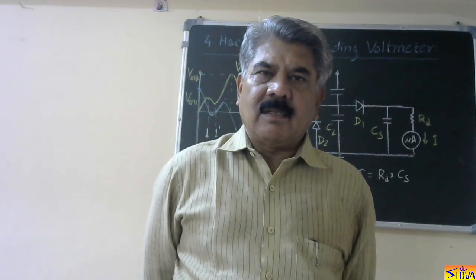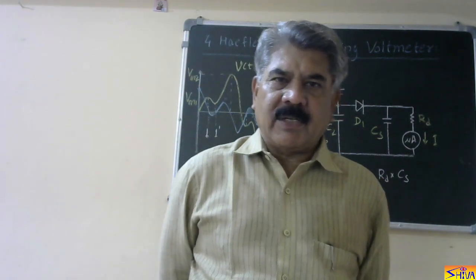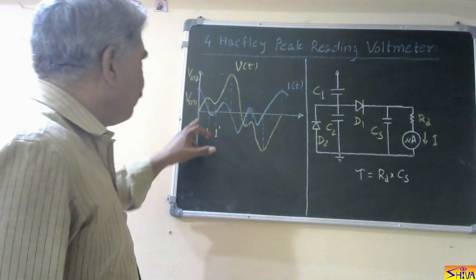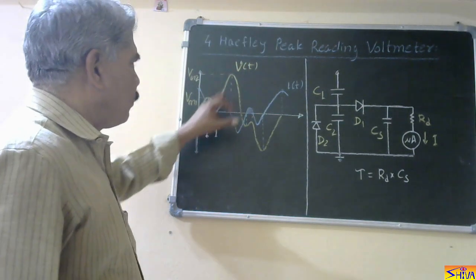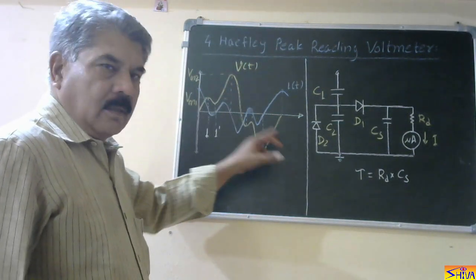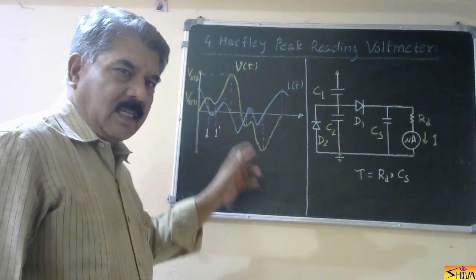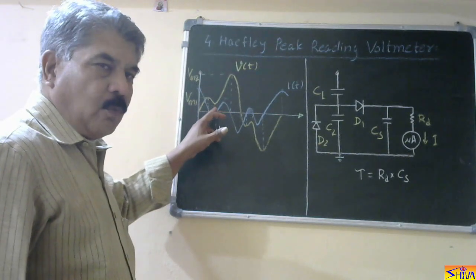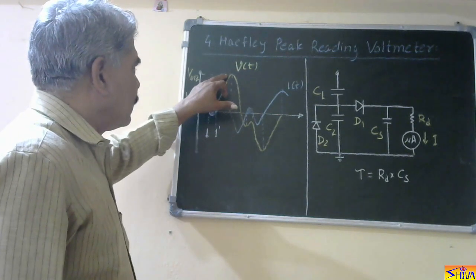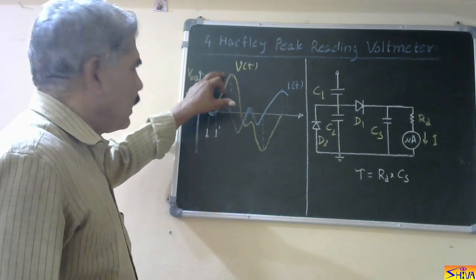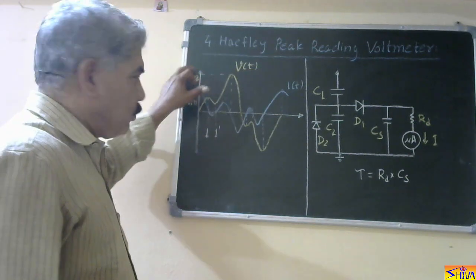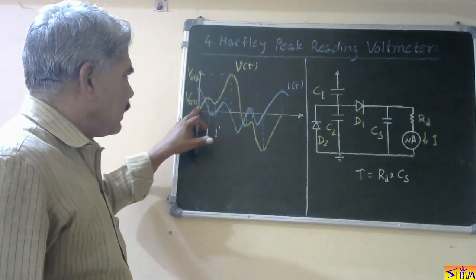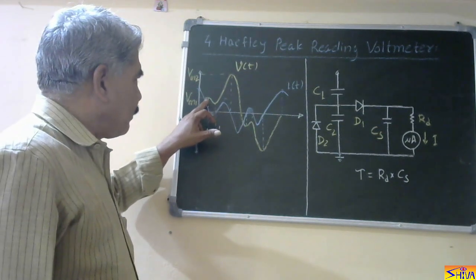Now, in the previous method, there is one limitation. Consider this waveform — this is the voltage waveform, and it is not sinusoidal; it contains harmonics. Here you can observe there are more than one maxima. This is the actual peak value Vm2. The voltage is increasing, attains some peak value, then starts reducing, then again starts increasing.